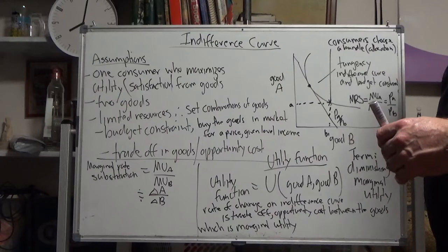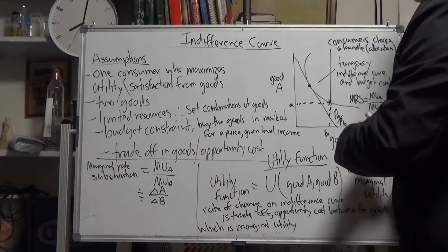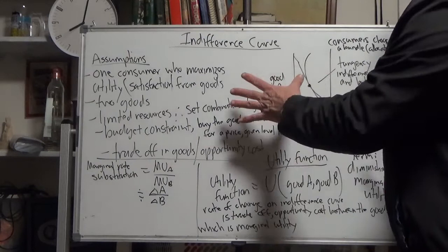There's a trade-off, an opportunity cost. The consumer trades off between more of one good and less of the other good, or conversely more of the other good and less of the other one.